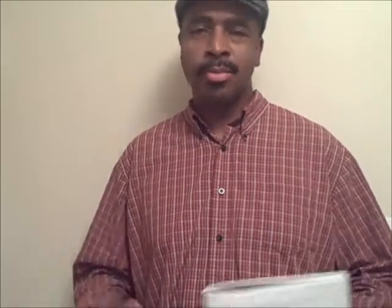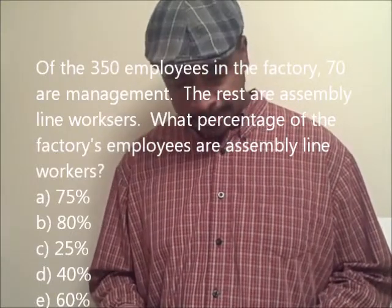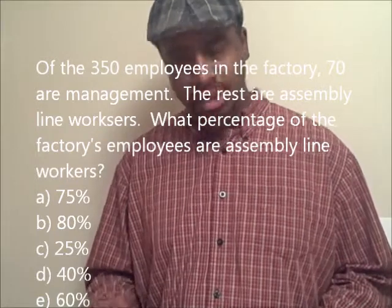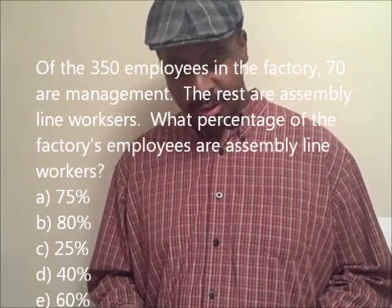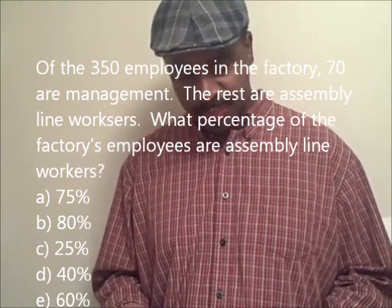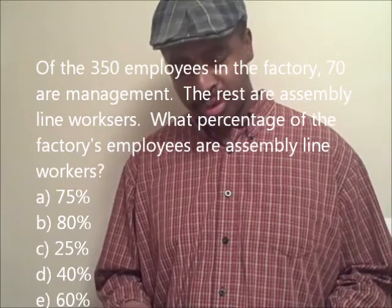I want to put a question out there and you can feel free to respond right here in the comment section. Don't be afraid to get the answer wrong. Here we go: Of the 350 employees in the factory, 70 are management — the rest are assembly line workers. What percentage of the factory's employees are assembly line workers? A) 75%, B) 80%, C) 25%, D) 40%, or E) 60%?